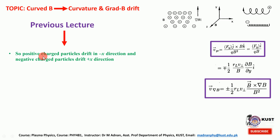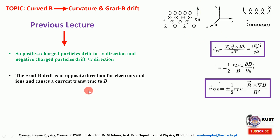We concluded that a positive charged particle drifts in the minus x direction and a negative charged particle drifts in the positive x direction. The grad-B drift is in opposite directions for electrons and ions, and as a result there exists a transverse current.